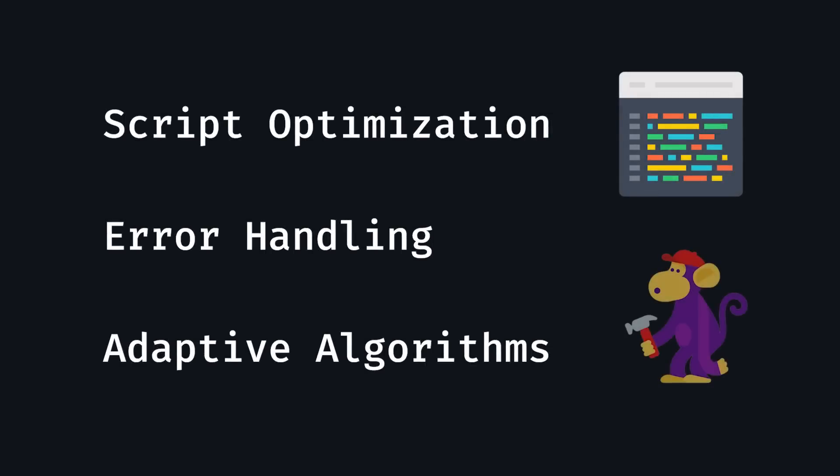Now, script optimization, error handling, and adaptive algorithms. We've discussed this overall idea in three of my last four videos — sometimes you can get away with writing inefficient code when your project is on a smaller scale, but if you try to do the same on a large-scale project, those inefficiencies really take their toll. Just like a typical programming project, when you're dealing with large-scale data extraction, you have to make sure everything is efficient and reliable.